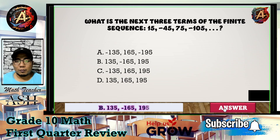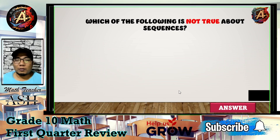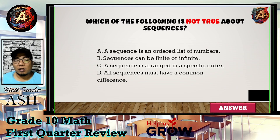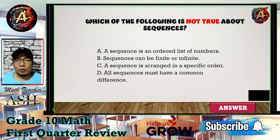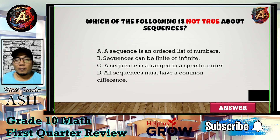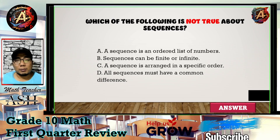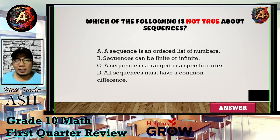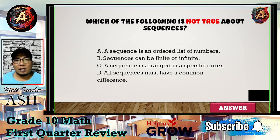Question number three: Which of the following is NOT true about sequences? Is it A) a sequence is an ordered list of numbers, B) sequences can be finite or infinite, C) a sequence is arranged in a specific order, or D) all sequences must have a common difference? I'll give you five seconds to think about your answer.